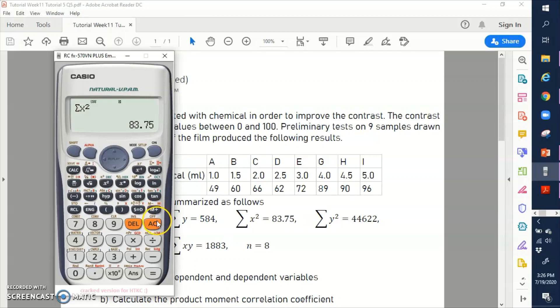You can just use this function in your calculator. Okay. You can even get your x bar and y bar from here. You go to var. There you go. You have the average for x and also average for y.